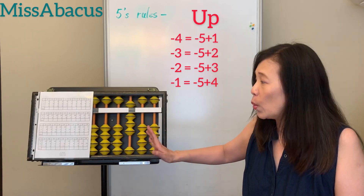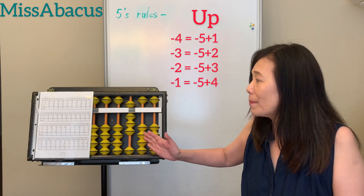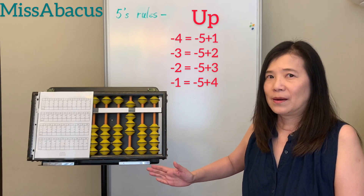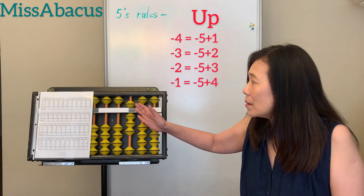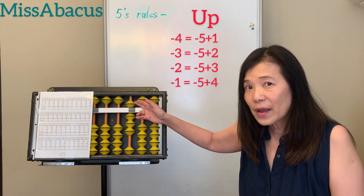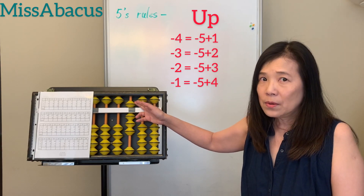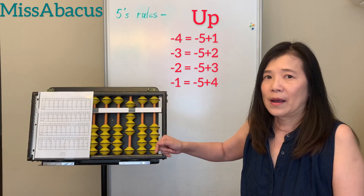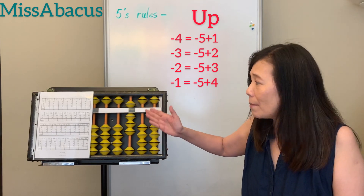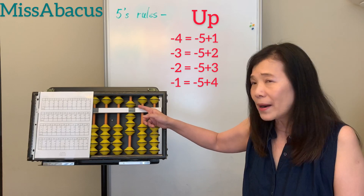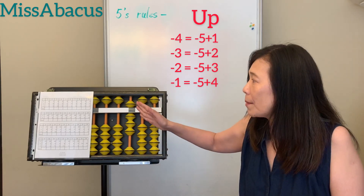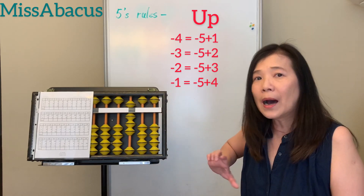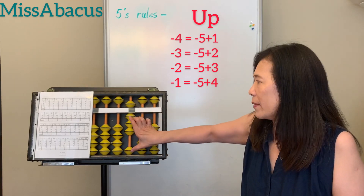Now we are going to do minus 4. Same thing — if you have 5 available, use the 5. So for the minus 4, if you minus 5, you need to add 1 back. So for minus 4, it's up 5, up 1.